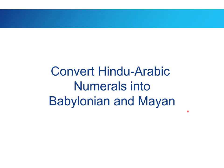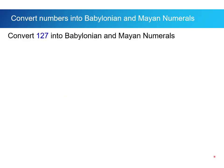Now, so far we've converted numbers from the ancient systems into our system, but what if we want to go the other way around? What if I want to convert Hindu-Arabic numerals into Babylonian and Mayan? Let's go the other direction. We'll start easy. Let's convert 127 into Babylonian and Mayan.